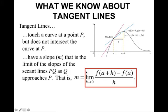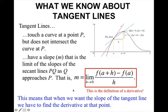This should look familiar — this is your derivative. This means that when we want the slope of the tangent line, we have to find the derivative at that point. And we have been doing this, but now we get to finally find the slope of the tangent line using the shortcut rules.